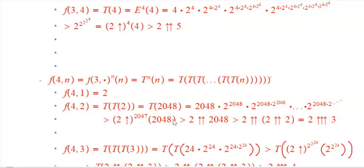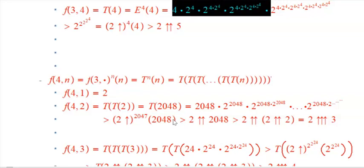For this whole series, what you want to do — it's going to be a little bit of an exercise in self-deception — is at any particular point, stop and ask: do I have some feel, even a little bit of feel, of what T is doing? That was the third function, already doing a lot of exponential iteration.